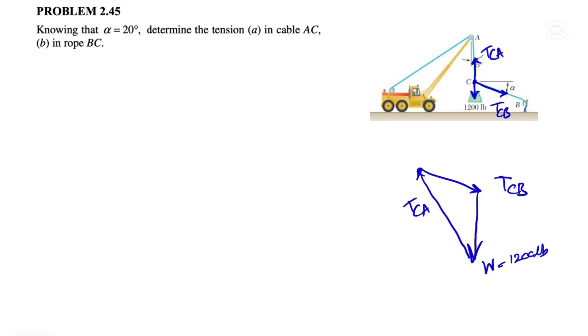So we have TCA and finally we have the weight of 1200 pounds which will be downward. If we want to use trigonometry, as always, we need to figure some angles and let's figure out how we can find those angles.